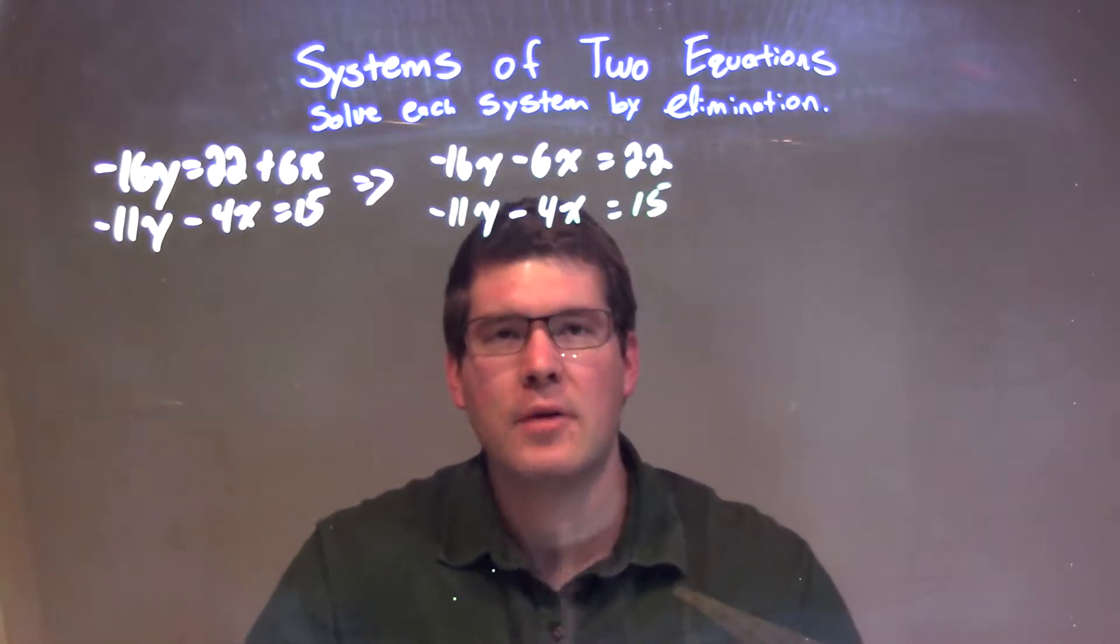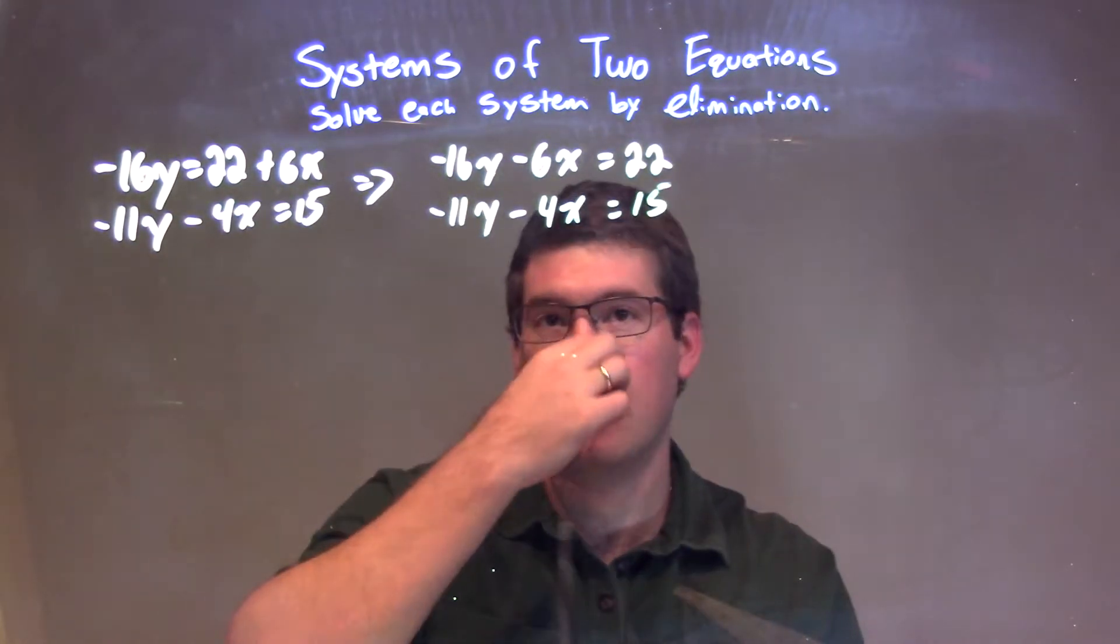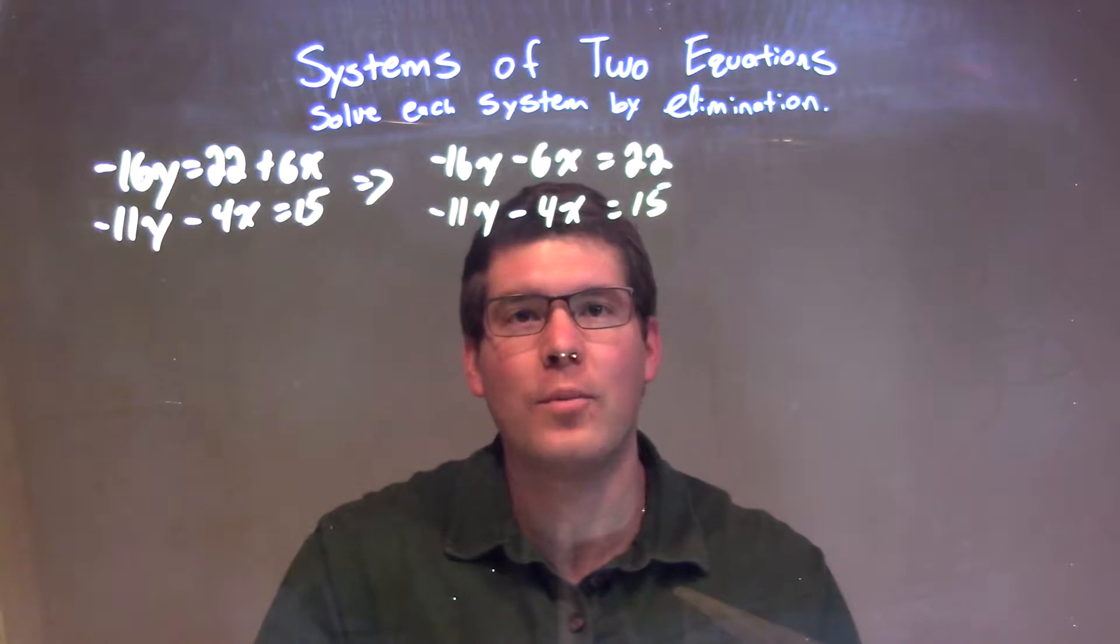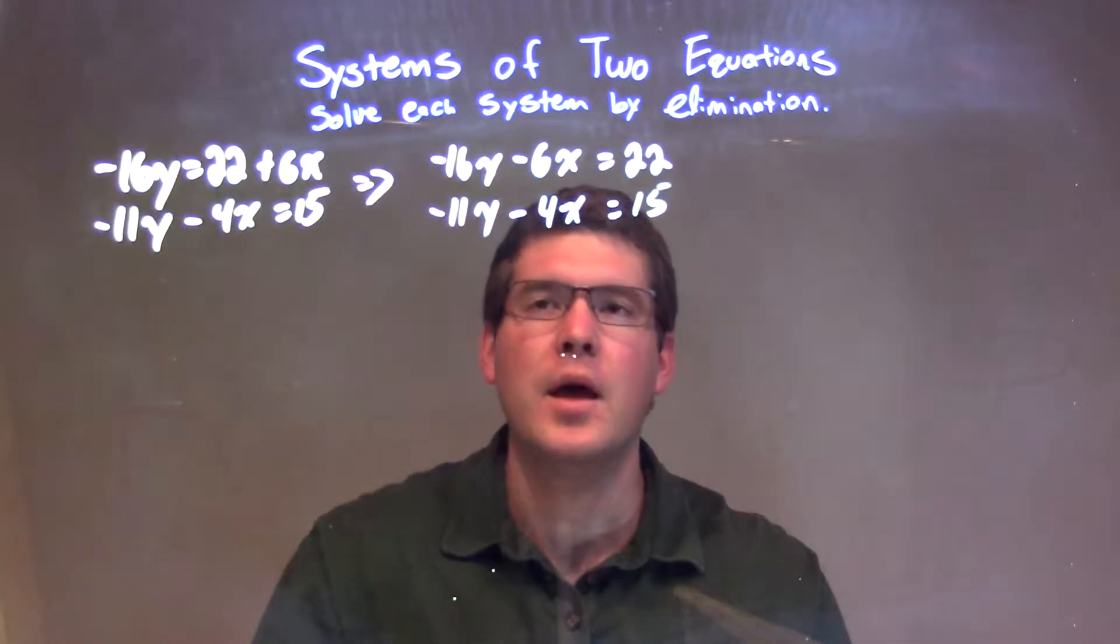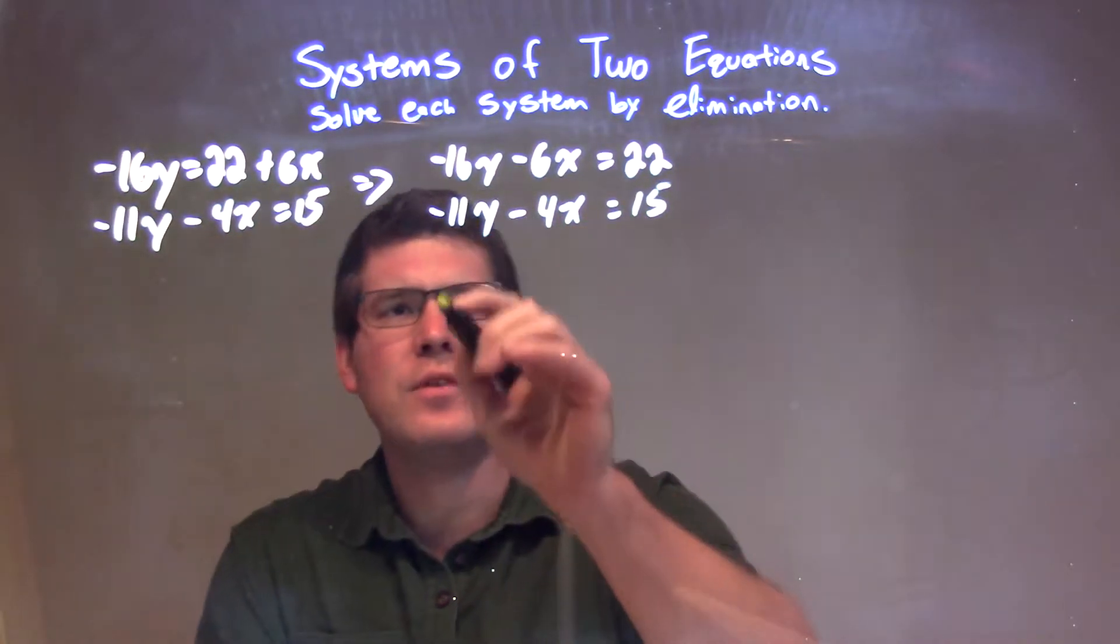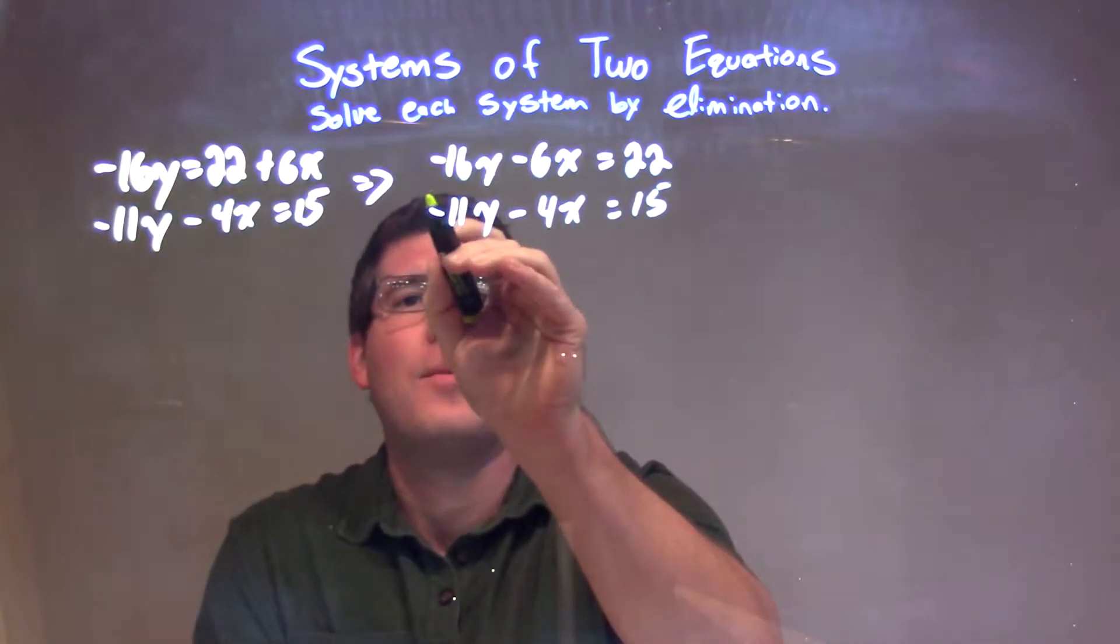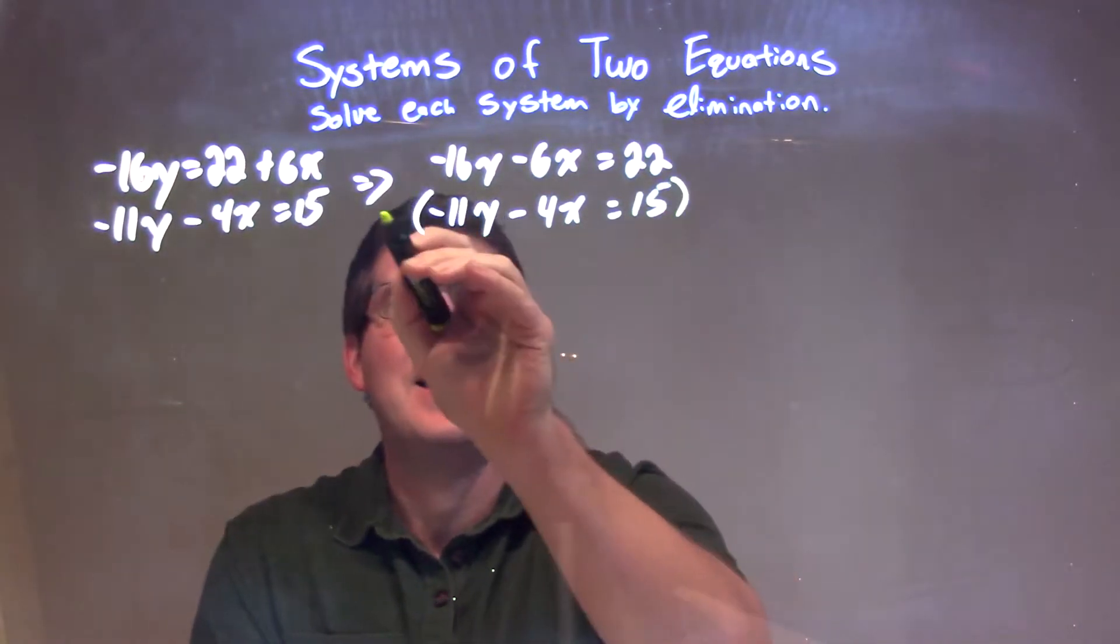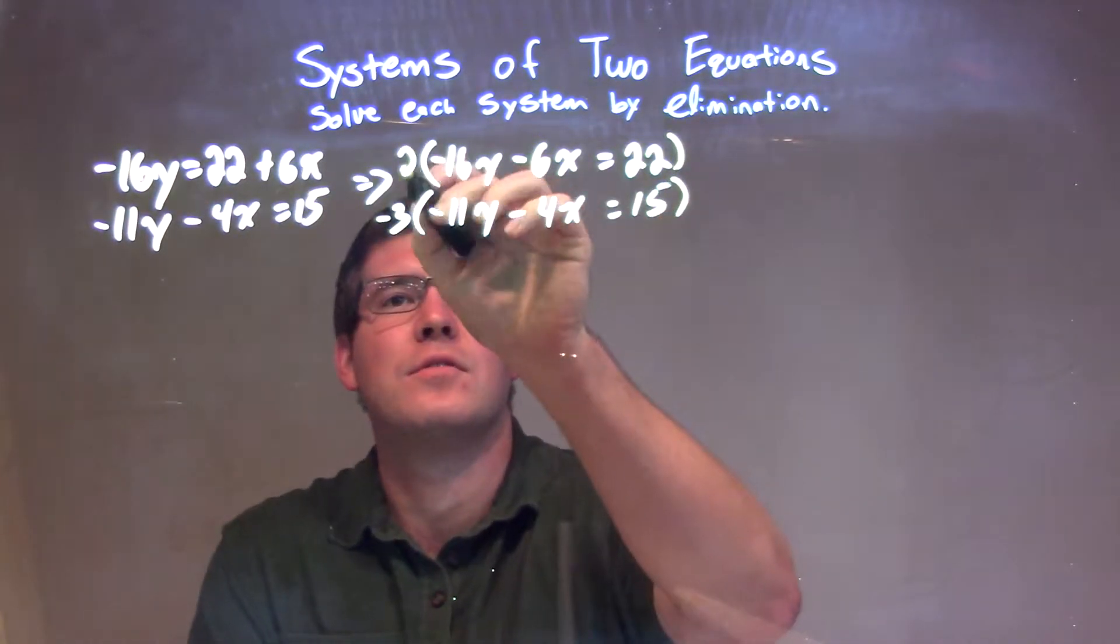Well, what I want to do now is see if I can eliminate one of the variables. And I'm thinking that x is going to be the easiest. If I multiply 4 by 3 and 6 by 2, both of them will equal 12. Now what's tricky though, is one of them I'm going to have to make negative. So I'm going to multiply the bottom one by a negative 3 and the top one by a positive 2.